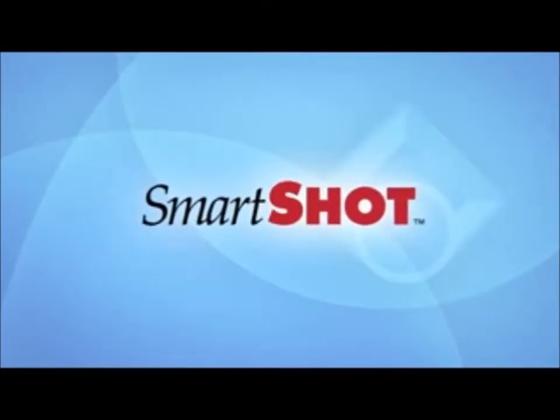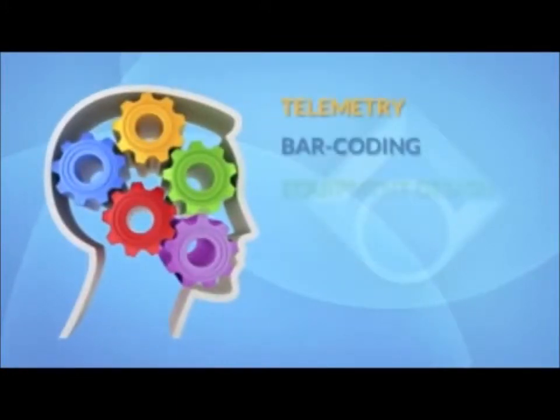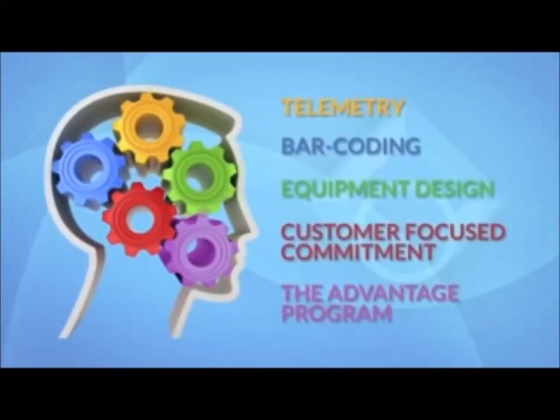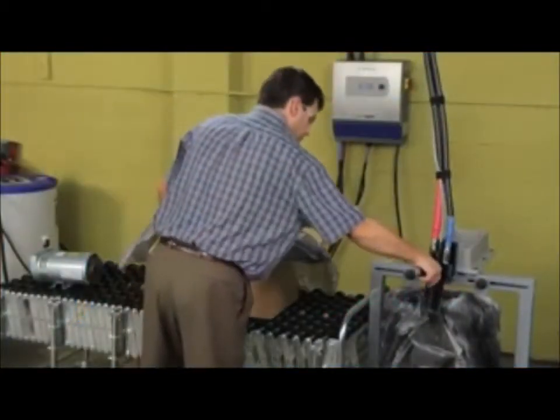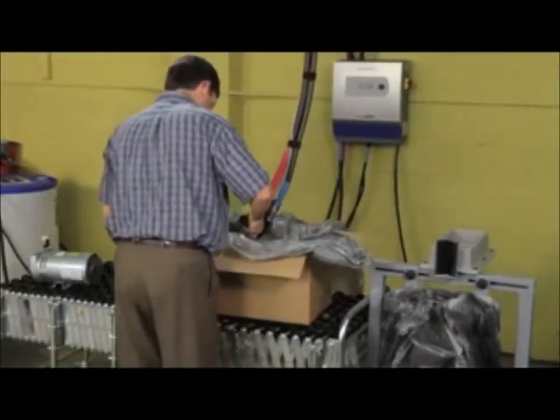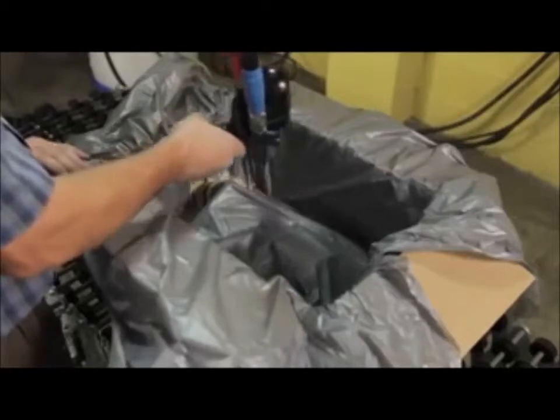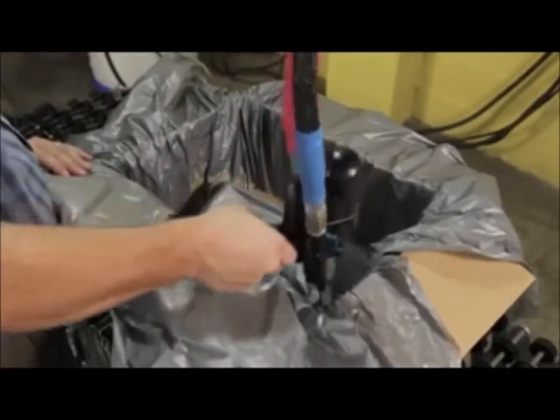Intellipak SmartShot is the smart choice for foam-in-place packaging with five degrees of separation. The SmartShot foam-in-place system is a compact machine that features a handheld dispenser that allows the operator to dispense the foam into any size or shape container.